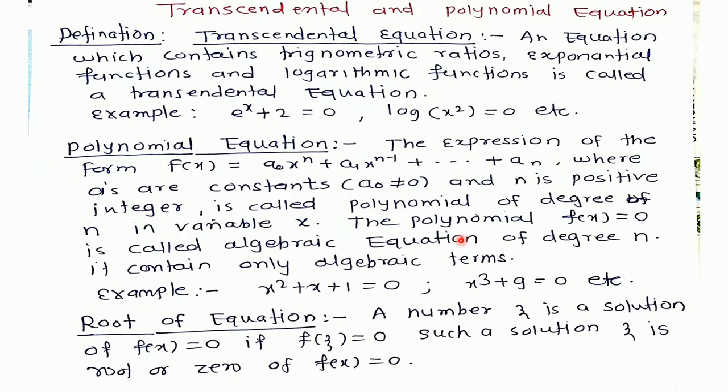Let us start with the definition of transcendental equation. An equation which contains trigonometric ratios, exponential functions, and logarithmic functions is called a transcendental equation. For example, e^x + 2 = 0, or log(x^2) = 0. These are examples of transcendental equations.